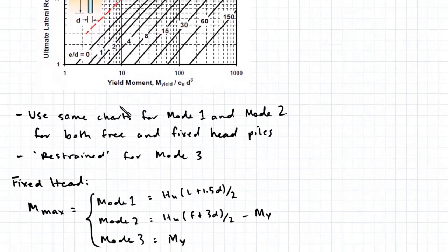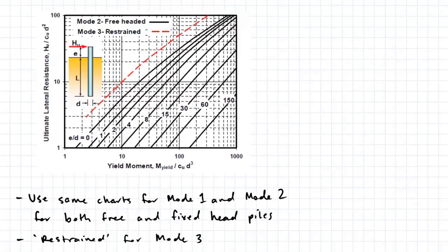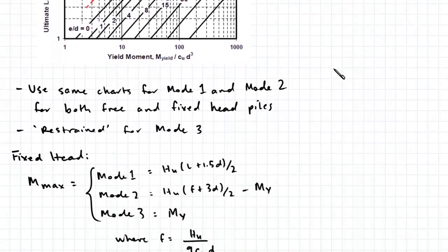We use these two charts for Mode 1 and Mode 2 for both free and fixed head piles. For Mode 3, we use the second chart but project upwards towards the restrained line.